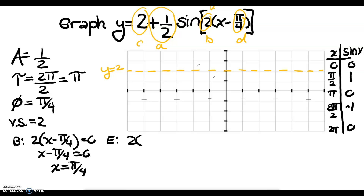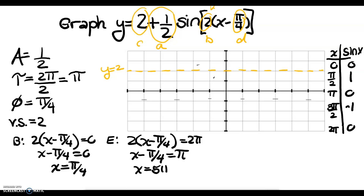And where will we end? We're going to set this equal to 2 pi. When I divide both sides by 2, I get pi on the right-hand side. And when I add pi over 4, I get 5 pi over 4. There's a nice width of 4 there. So I'm going to mark pi over 4 and then count by pi over 4: 1, 2, 3, 4, 5 pi over 4.